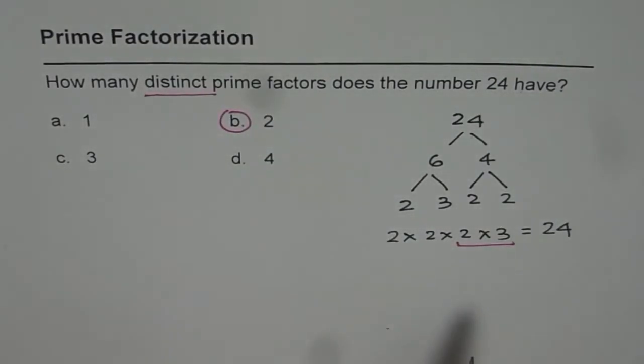Remember 1 is not a prime number. So therefore don't add 1 to your list and make it 3. So that could be one of the errors. And understand the word distinct. So if you keep these things in mind then you get this question right.